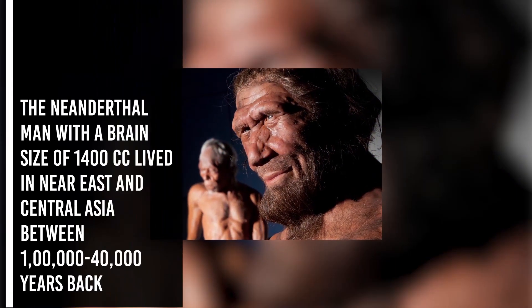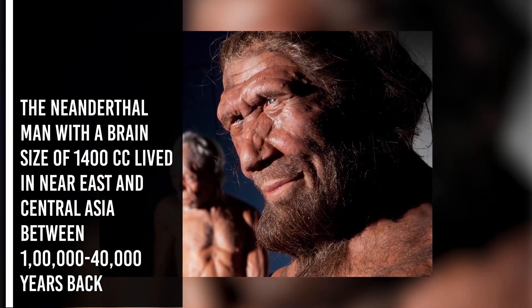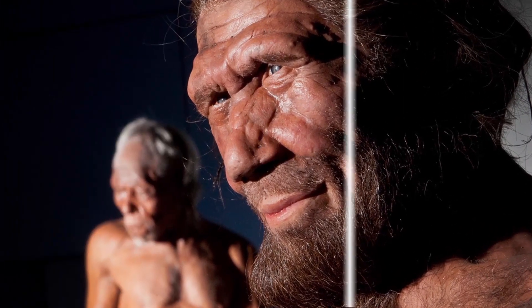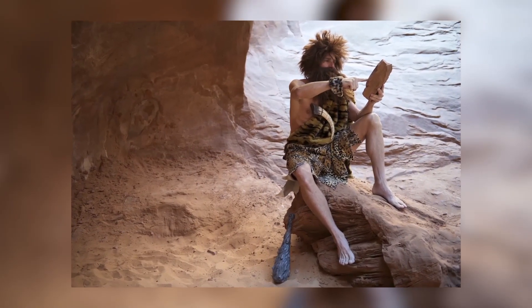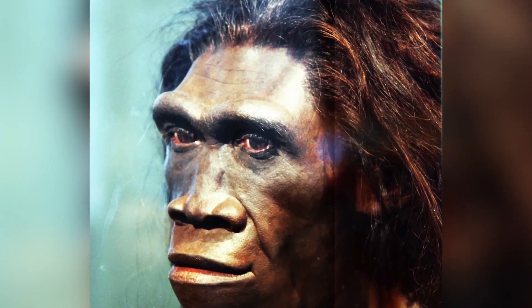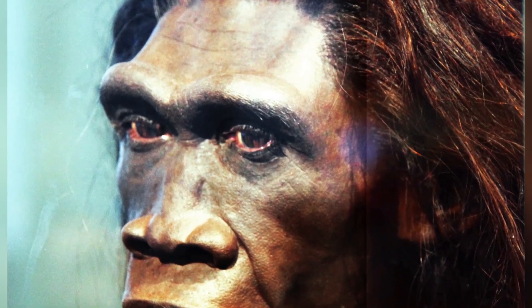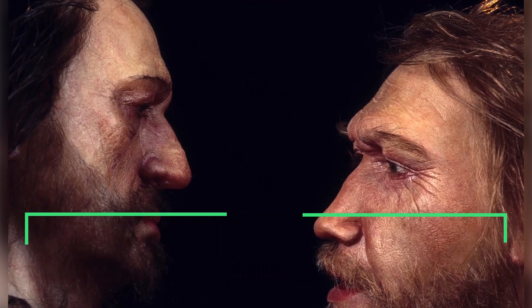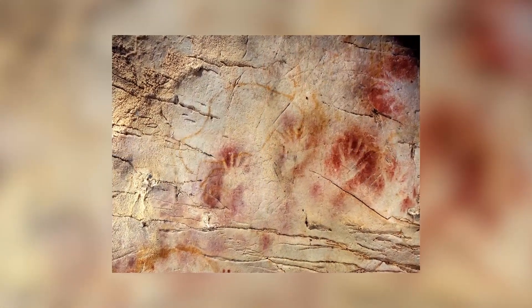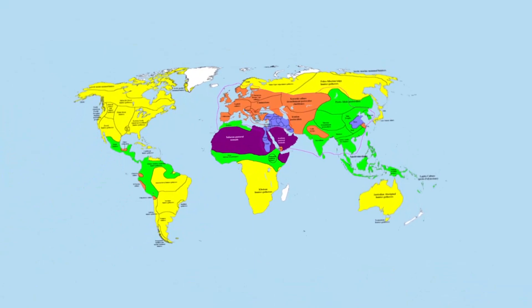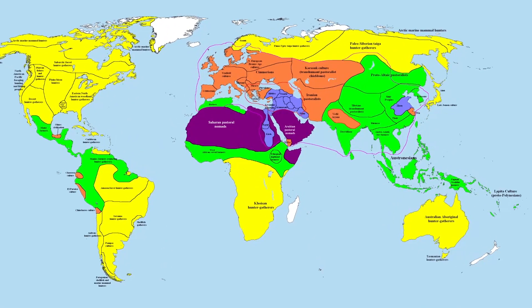The Neanderthal man, with a brain size of 1400 cc, lived in near East and Central Asia between 1 lakh to 40 thousand years ago. They used hides to protect their body and buried their dead. Homo sapiens arose in Africa and moved across continents, developing into distinct races. During the Ice Age between 75,000 to 10,000 years ago, modern Homo sapiens arose. Prehistoric cave art developed about 18,000 years ago. Agriculture came around 10,000 years ago and human settlements started. The rest is part of the human history of the growth and decline of civilizations.